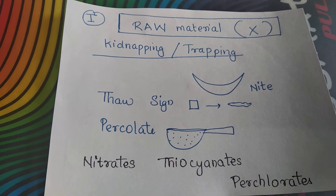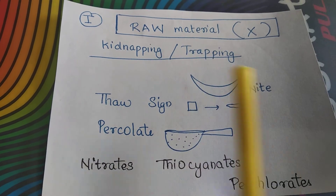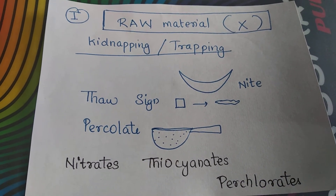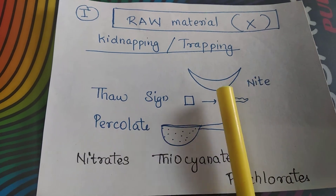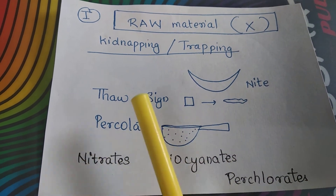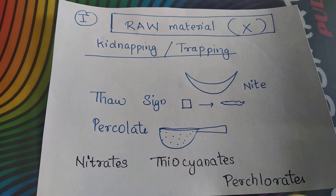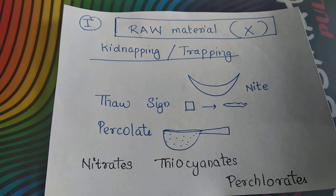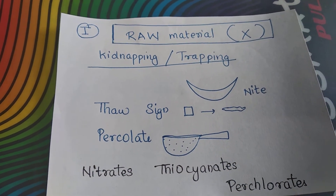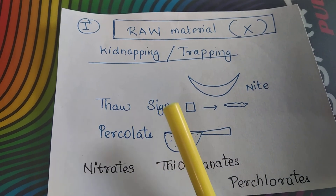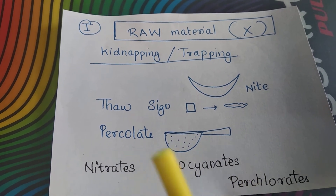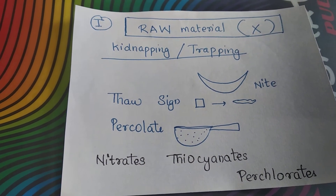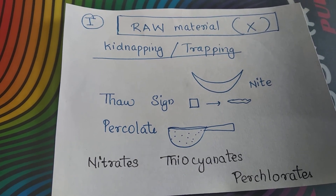Firstly, what we can do is inhibit the raw material — that is, we can inhibit the kidnapping or trapping of iodine. The mnemonic uses 'night' to represent nitrates, 'thiocyanate' represented by thaw sign, and 'percolate' representing perchlorate. So the drugs which inhibit the trapping of iodine are nitrates, thiocyanate, and perchlorate.